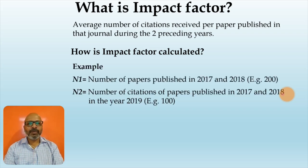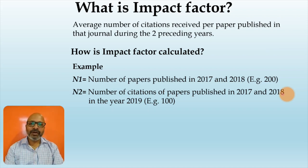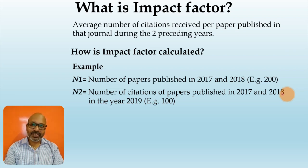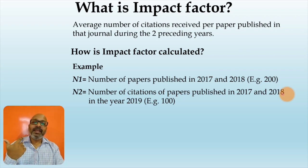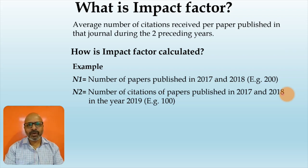Say N1 is the number of papers published in the years 2017 and 2018 in that particular journal. We will take as an example 200 papers published in a journal during those 2 years. N2 is the number of citations of papers published in 2017 and 2018 received in the year 2019. We will take as an example N2 as 100. How is this impact factor calculated? The formula is very simple.